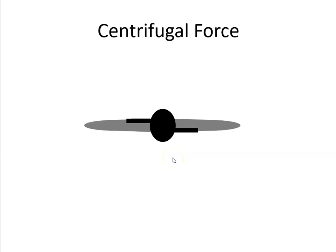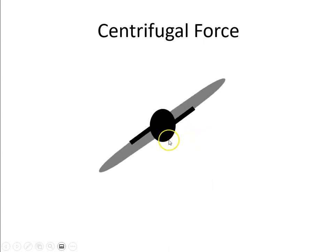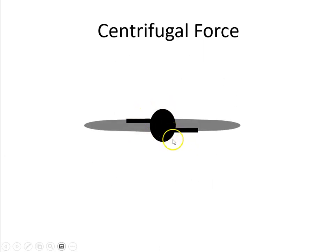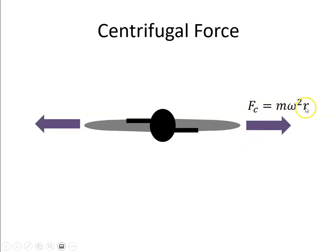Of the forces acting on a propeller, the most significant force is the centrifugal force. This force occurs when the propeller blades rotate, and its magnitude can be derived from the equation mω²r, where m is the mass of the propeller blade, ω is the rotational velocity in radians per second, and r is the radius of the propeller blade.